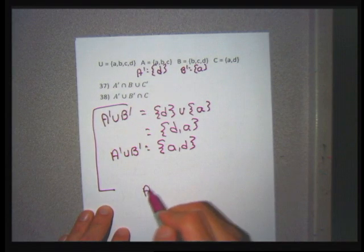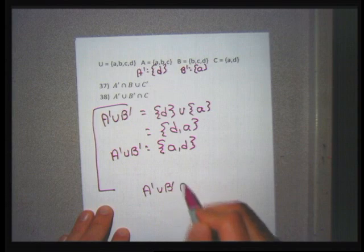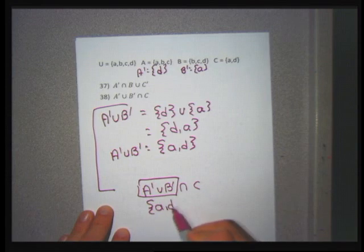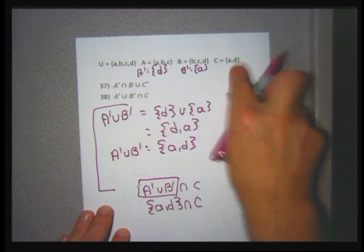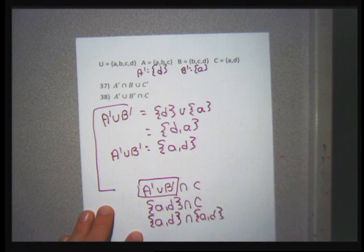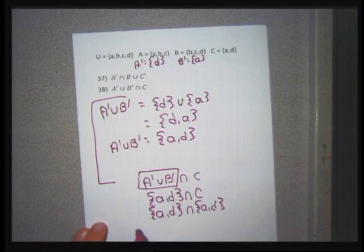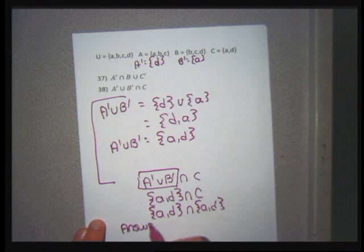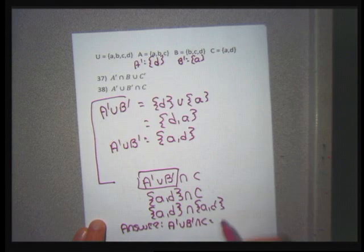Problem 38: A' union B' intersection C, working left to right. A = {A, B, C} so A' = {D}. B' = {A}. A' union B' = {D} union {A} = {A, D}. Set C = {A, D}. Now intersect {A, D} with C = {A, D}. They have A and D in common. A' union B' intersection C = {A, D}.